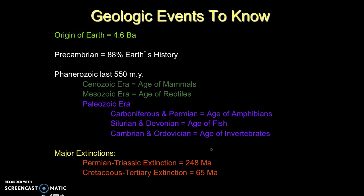Just going to take a quick closing. Some things to know: The origin of the Earth is 4.6 billion years old. The Precambrian represents 88% of the Earth's history. The Phanerozoic, which is just the last approximately 550 million years, includes most recently the Cenozoic, or age of mammals.